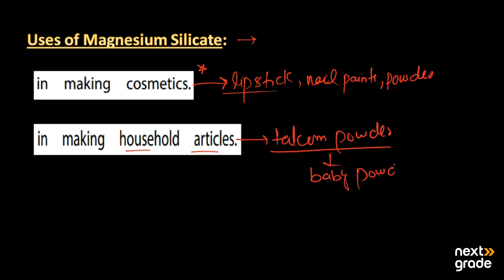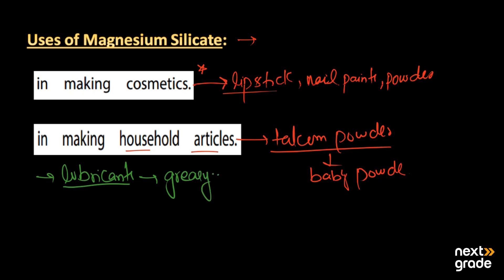Magnesium silicate is also used as a lubricant. The reason it works as a lubricant is because of its greasy touch. Along with that, magnesium silicates are also used as food preservatives.